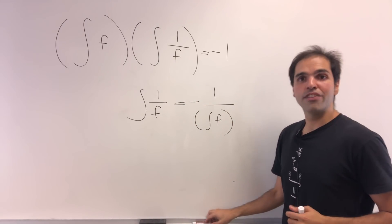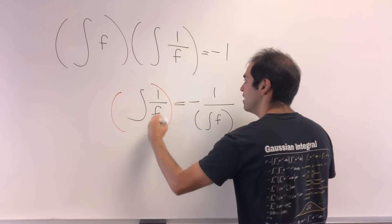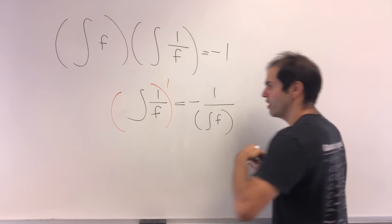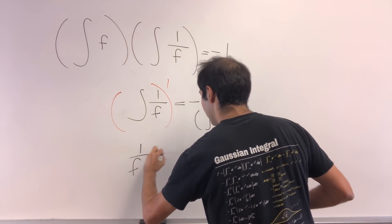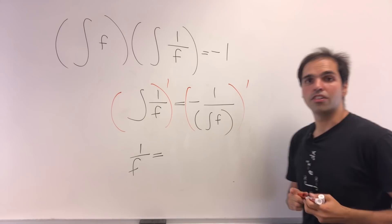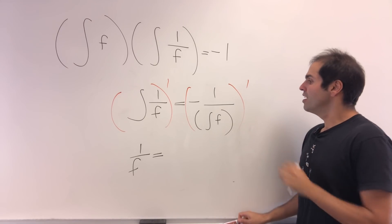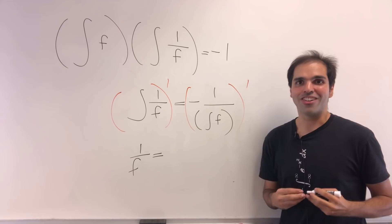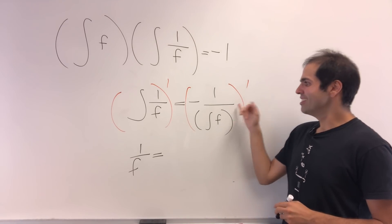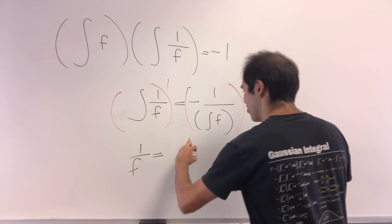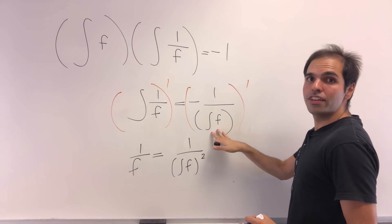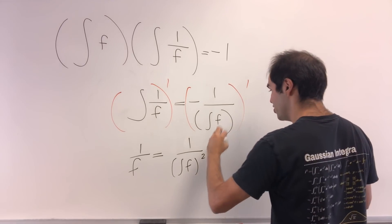And now let's differentiate both sides. On the one hand, we get the derivative of the integral of 1 over f, which is just the function itself: 1 over f. On the other hand, we get the derivative of that whole expression. But remember, integrals are functions themselves, so they deserve the chain rule as well. Using the chain rule, we get 1 over the integral of f squared, times the derivative of the integral, which is just f.